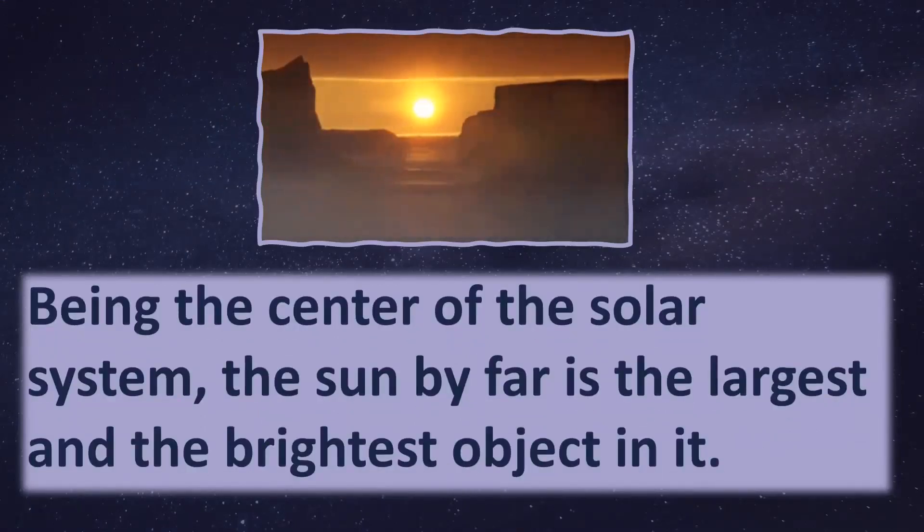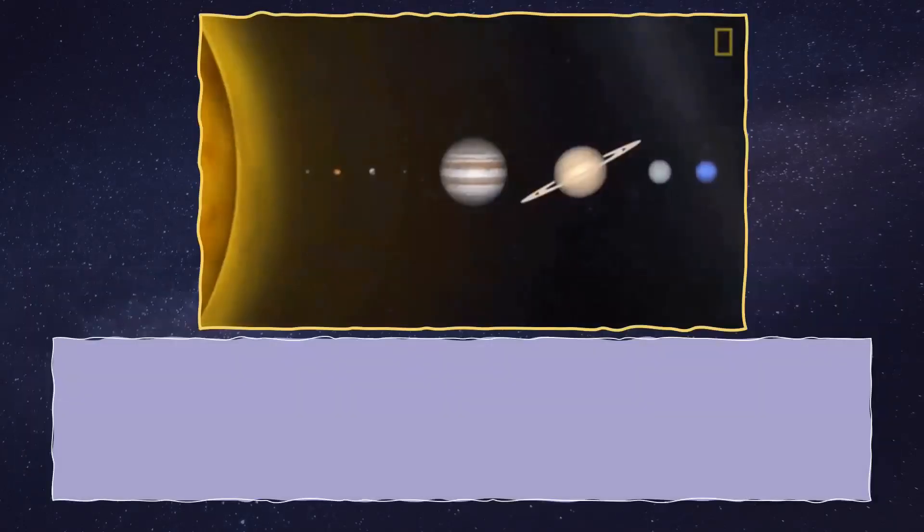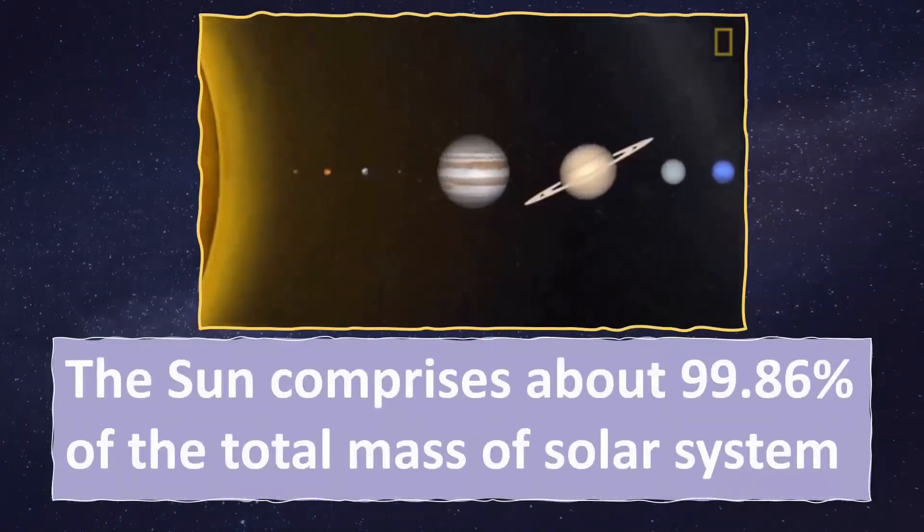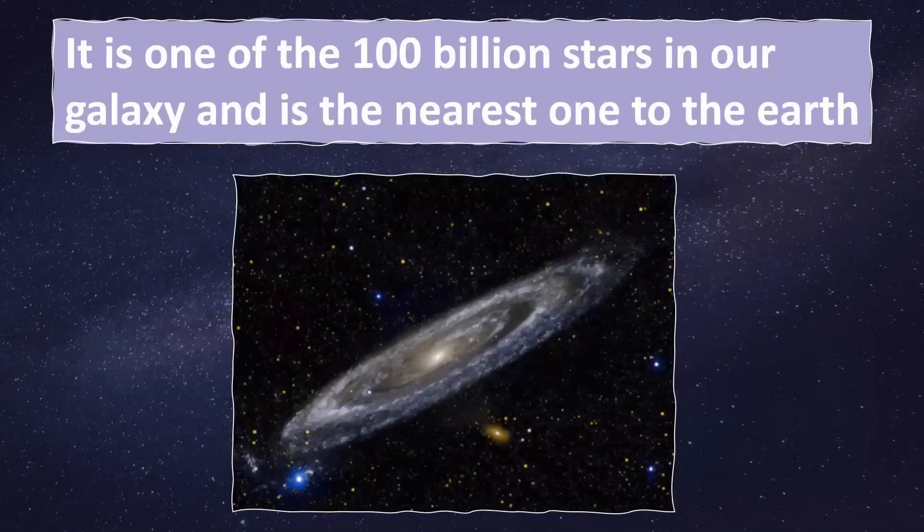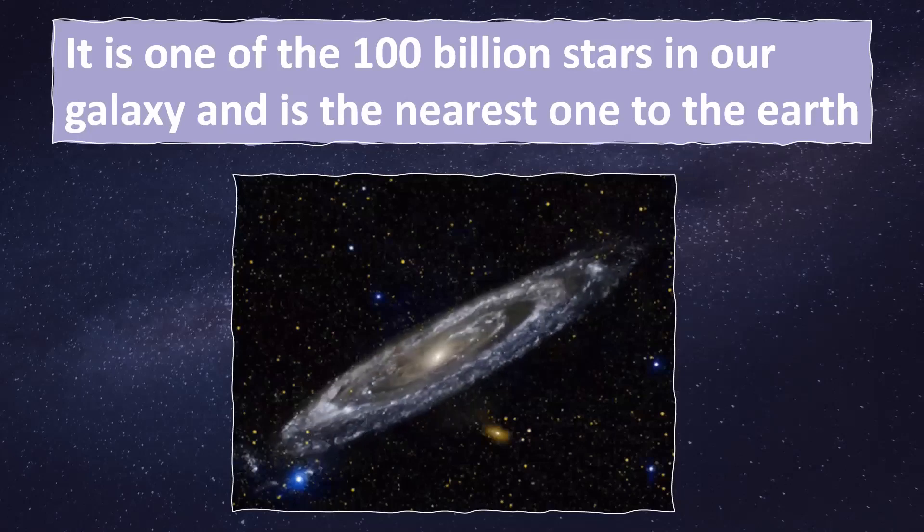Being the center of the solar system, the sun is by far the largest and brightest object in it. The sun comprises about 99.86% of the total mass of the solar system. It is one of the 100 billion stars in our galaxy, the Milky Way, and is the nearest one to Earth.